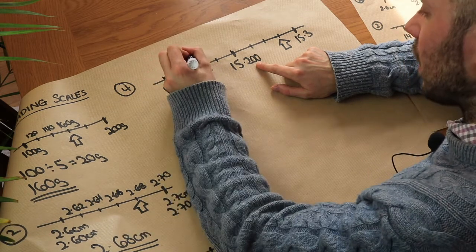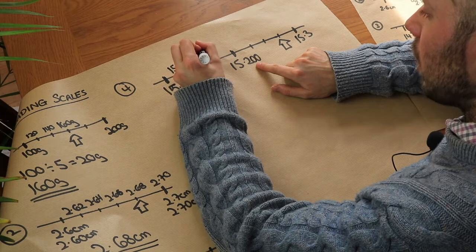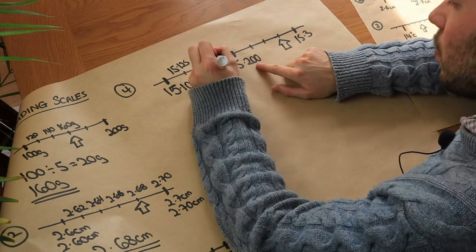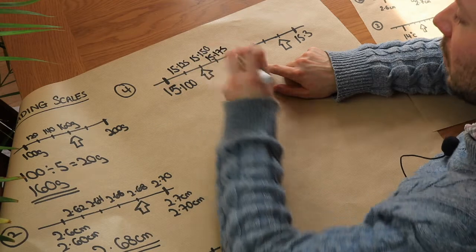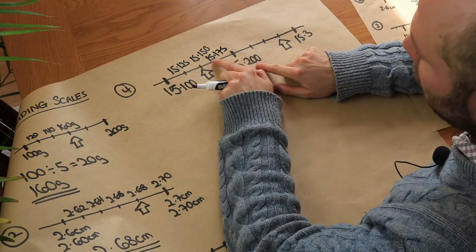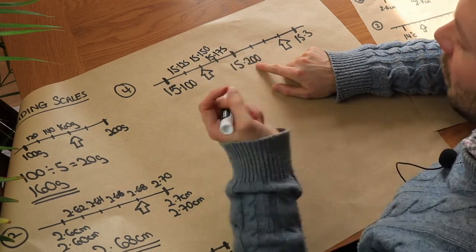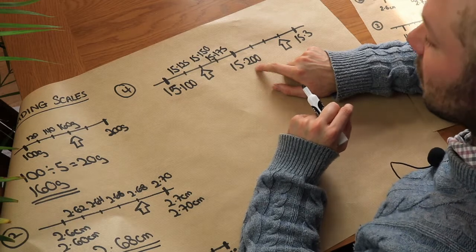And then add 25 again, 15.150. And then 15.175, adding 25 each time. And then when you add 25 again you get 15.200, 15.2. So that does indeed work.